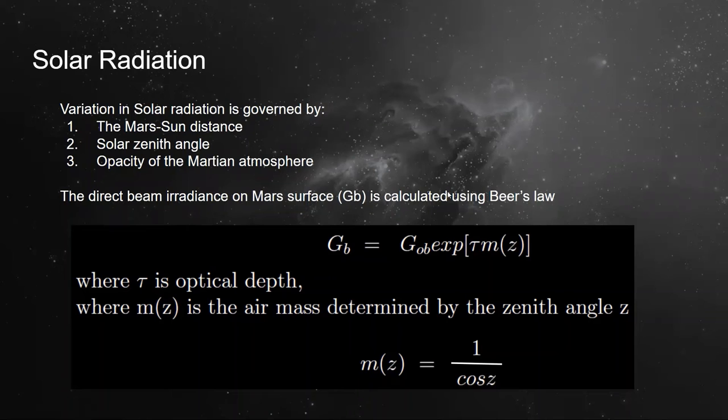Using Beer's law, we can calculate the value of direct beam irradiance which depends on the optical depth. First, direct beam irradiance is given by beam irradiance at the top of the Mars atmosphere, GOB, into exponential of optical depth into air mass.